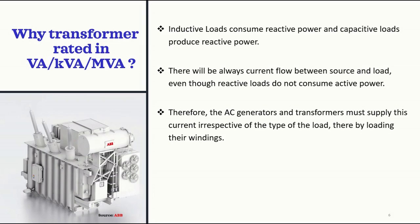The load can be resistive or reactive — and within reactive, it can be capacitive or inductive — it doesn't matter. There will always be current flow between source and load, and this current has to be supplied by the transformers and AC generators. That's why transformers and AC generators are rated in volt amperes, kilo volt amperes, or mega volt amperes instead of kilowatts.